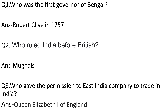Question number 1: Who was the first governor of Bengal? Answer is Robert Clive in 1757. Question number 2: Who ruled India before British? Answer is Mughals. Question number 3: Who gave the permission to East India Company to trade in India? Answer is Queen Elizabeth I of England.